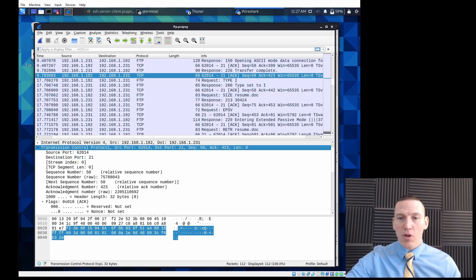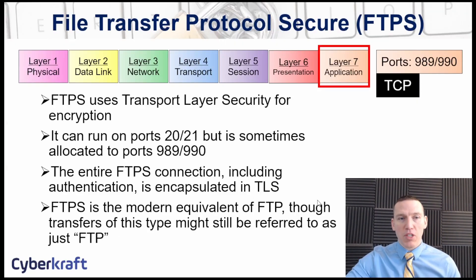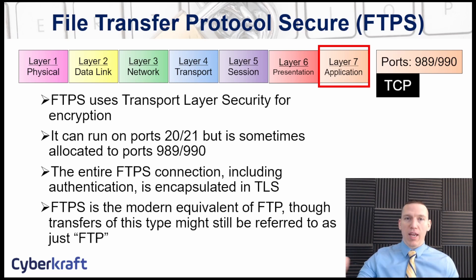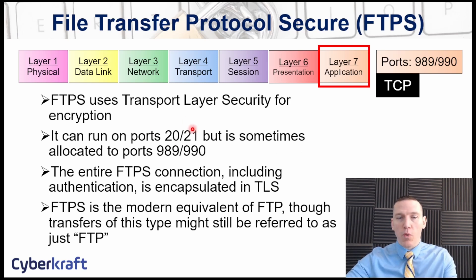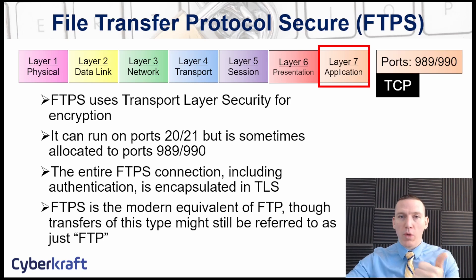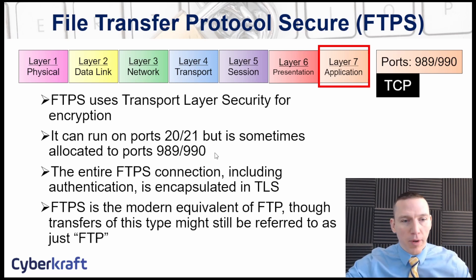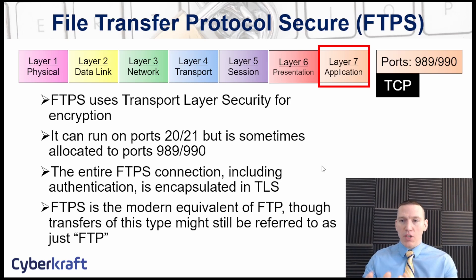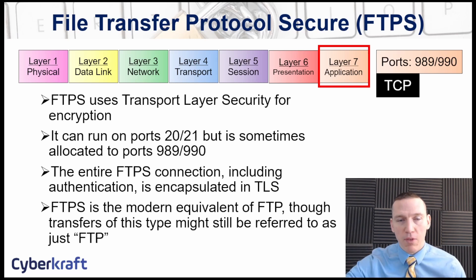FTP is still used today, but in a different way. We now have File Transfer Protocol Secure (FTPS), which uses Transport Layer Security for encryption, so authentication is no longer over unencrypted channels. FTPS can run on ports 20 and 21, just like FTP, but is sometimes allocated to ports 989 and 990. Just like 20 and 21, port 990 is the control port and 989 handles transfers. People often still just refer to it as FTP even when using FTPS with TLS. It's a layer 7 application TCP connection.